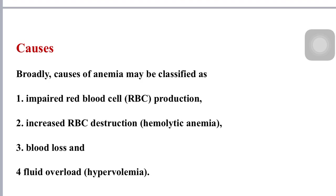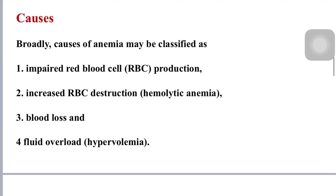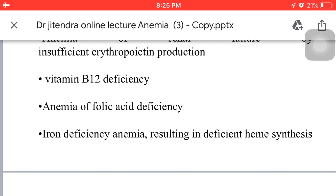Coming to impaired production: anemia of renal failure due to insufficient erythropoietin production, Vitamin B12 deficiency anemia, folic acid deficiency anemia, and iron deficiency anemia resulting in deficiency of heme synthesis.